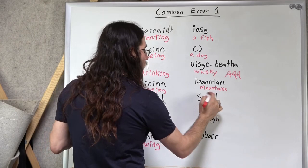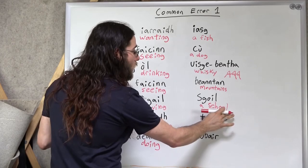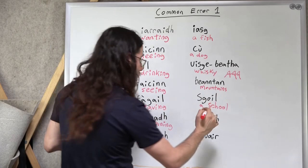Sgoil is a school. Primary school, high school, middle school, anything like that. Taigh, it's a house.